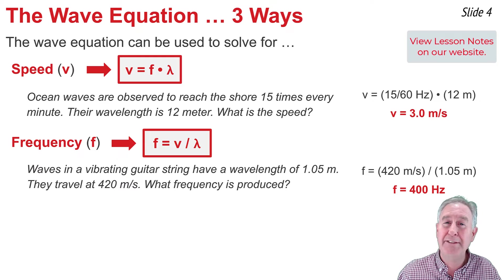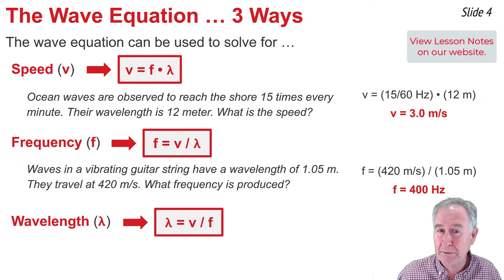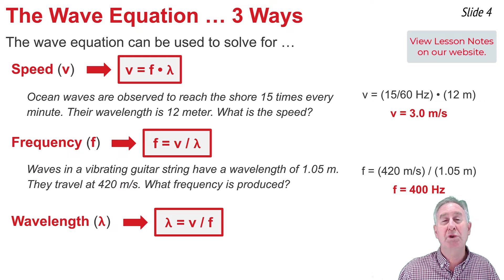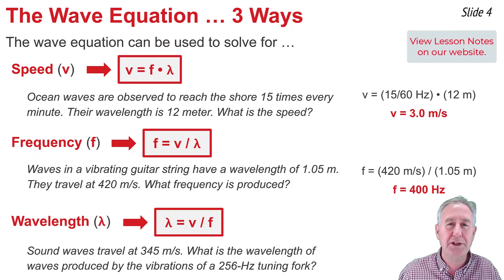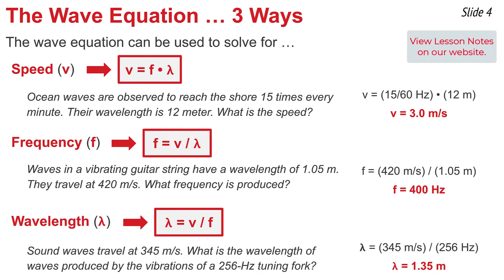But once more, the V equal F lambda equation can be used to solve for wavelength. I would have to rearrange it to get wavelength by itself by dividing both sides of the equation by frequency. Lambda or wavelength equal V divided by frequency, perfect for solving problems like sound waves travel at 345 meters per second. What is the wavelength of the waves produced by the vibrations of a 256 hertz tuning fork? I need to take the speed of 345 meters per second, divide it by the frequency of 256 hertz, and I get 1.35 meters for my wavelength.